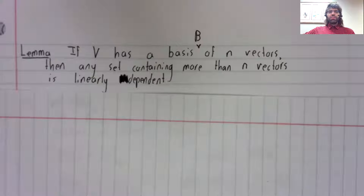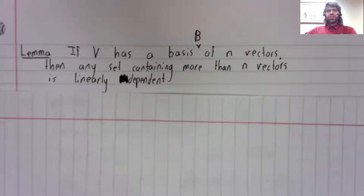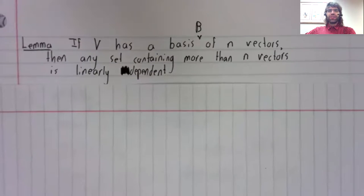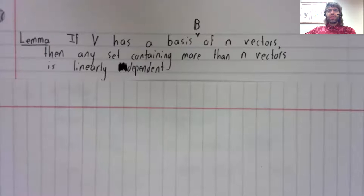If V has a basis of N vectors, then any set containing more than N vectors is linearly dependent.